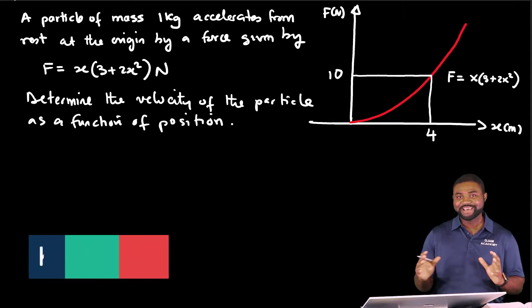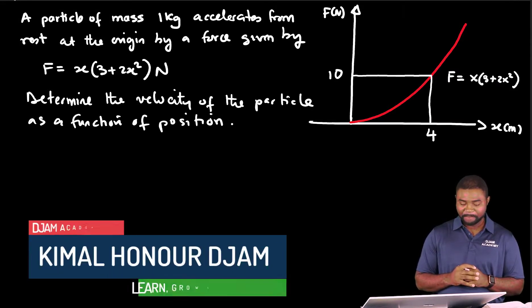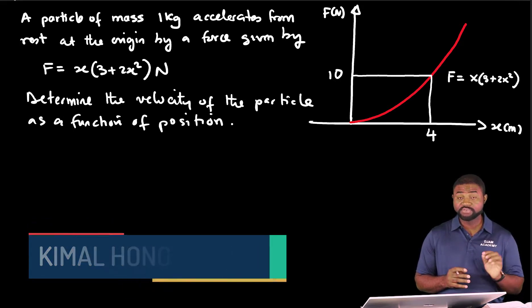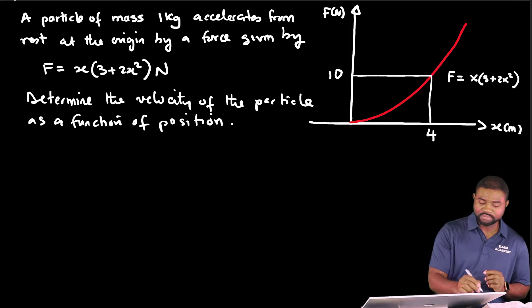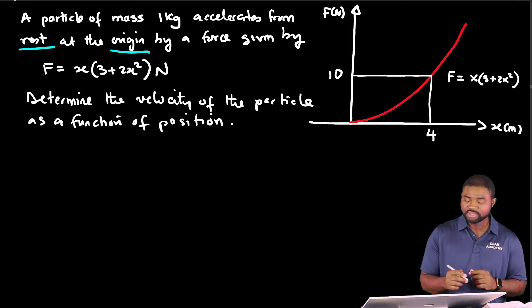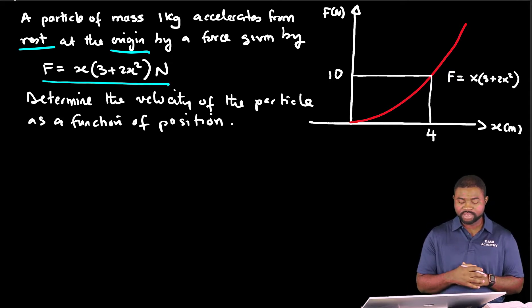Hello everyone and welcome to JAMA Academy. In this problem, a particle of mass 1 kilogram accelerates from rest—it's important you keep that in mind. The particle accelerates from rest at the origin by a force given by x(3 + 2x²) newtons. We are asked to determine the velocity of the particle as a function of position.